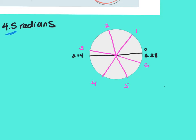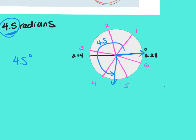To graph 4.5 radians, start at 0 and go around to about halfway between 4 and 5. More common radian values are things like π/2, π/4, or 7π/6. If a number doesn't have a degree symbol, it's a radian — even if it doesn't have π in it. So 4.5 with no degree symbol is a radian; 4.5° with the degree symbol is degrees.